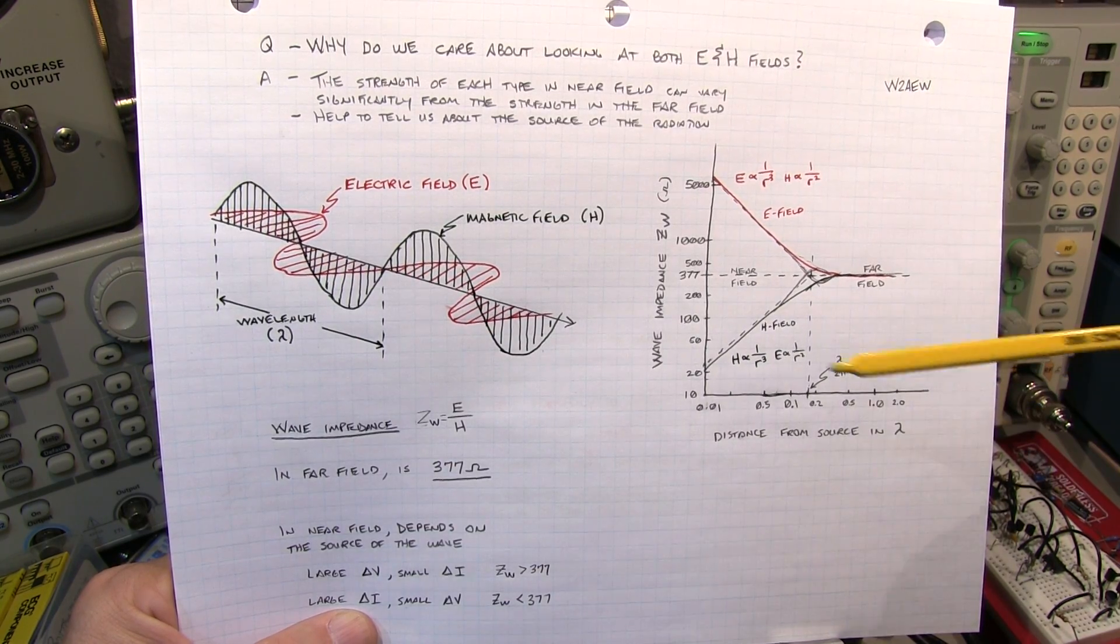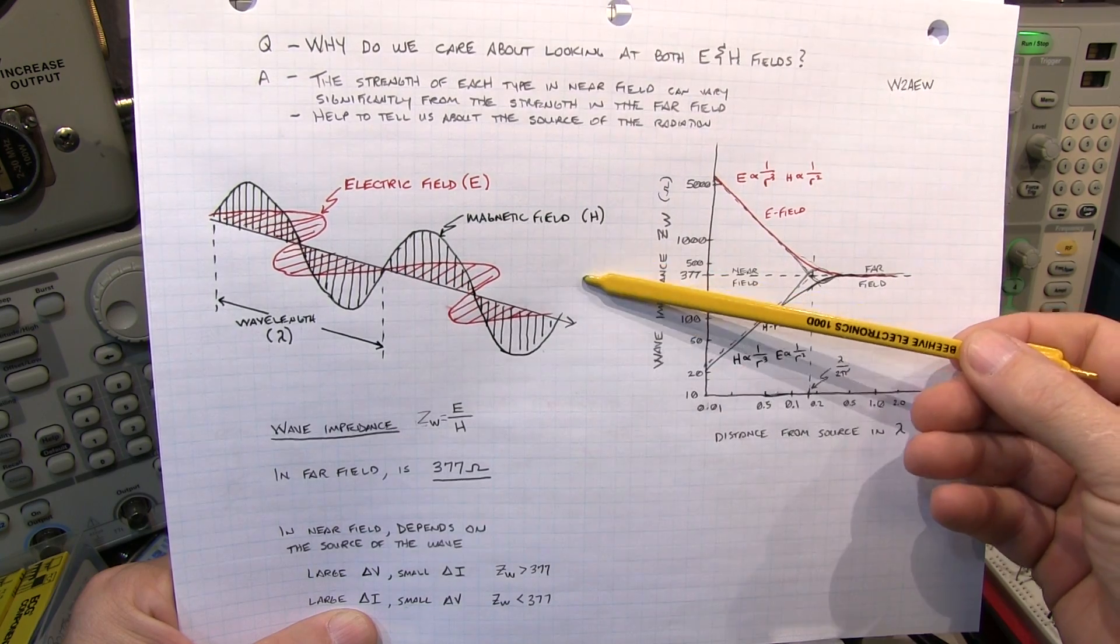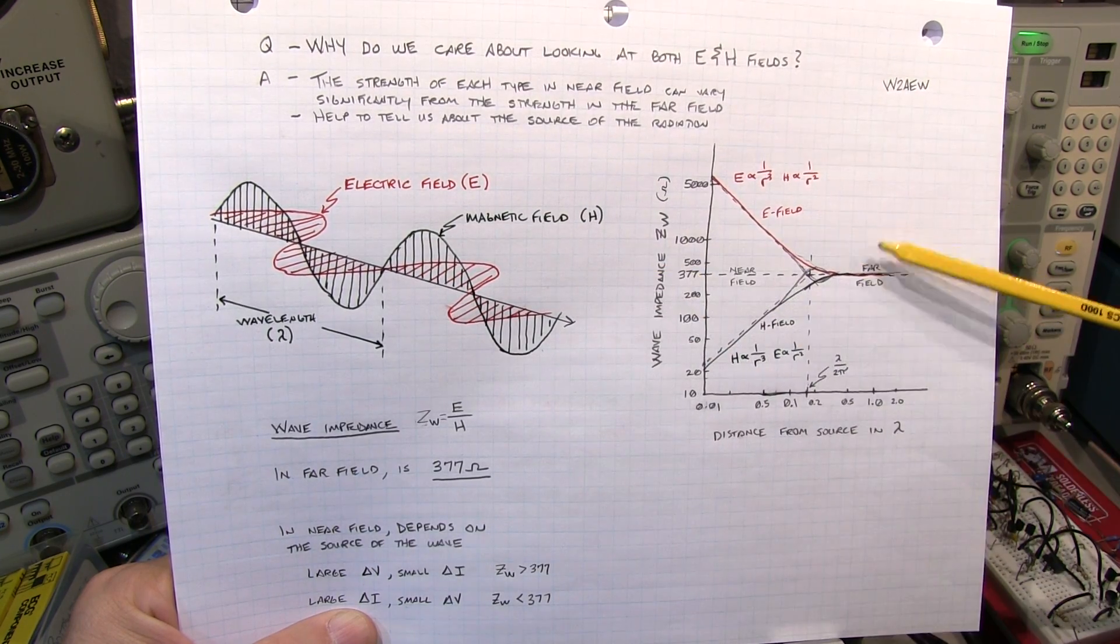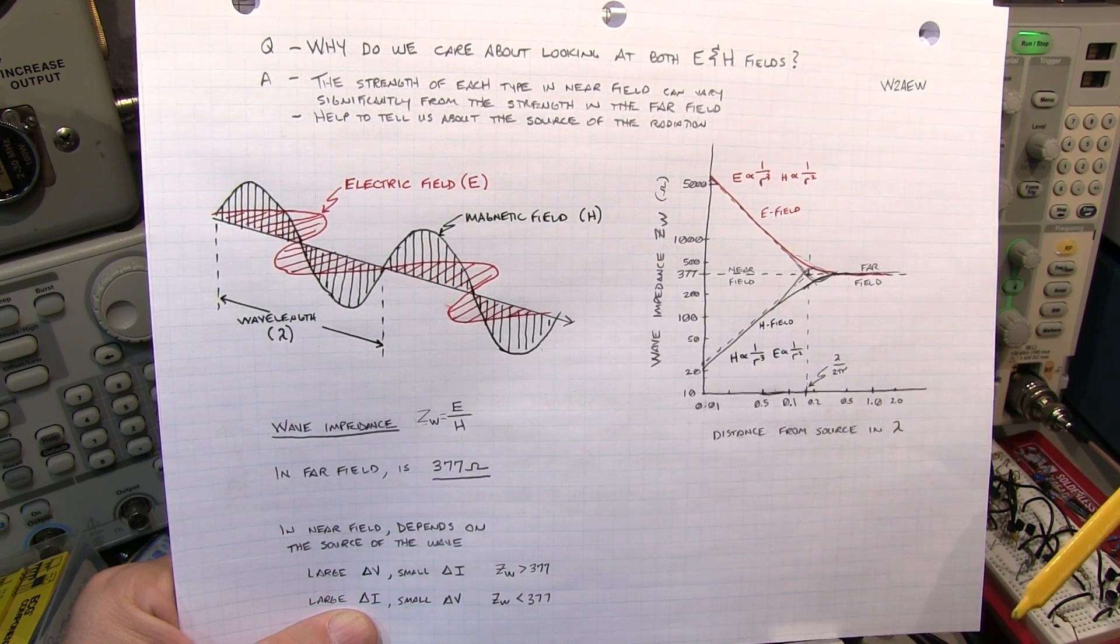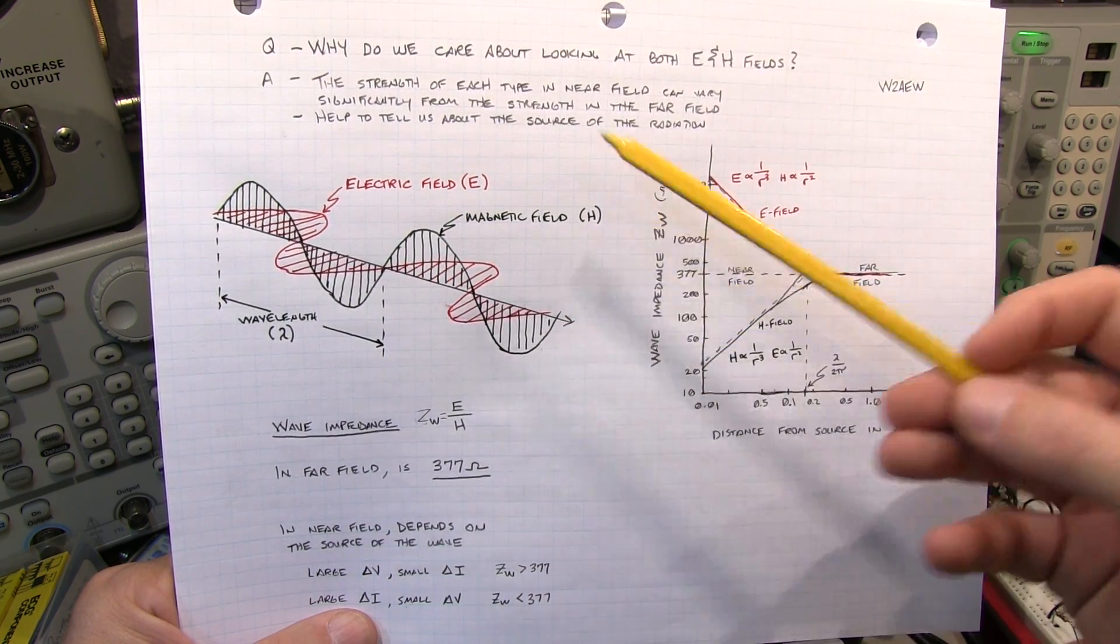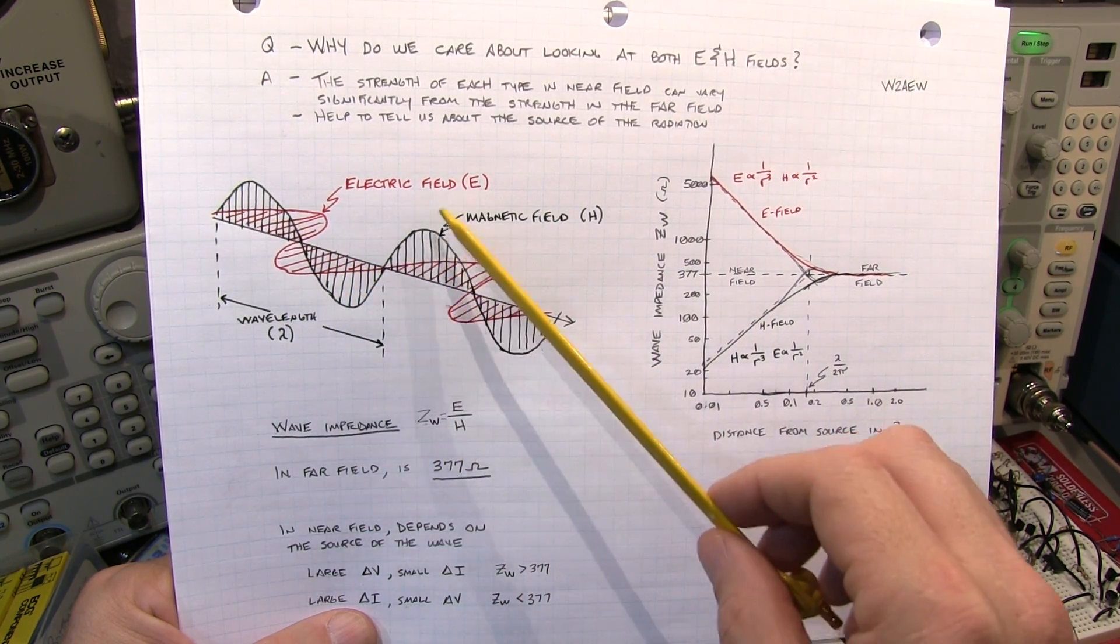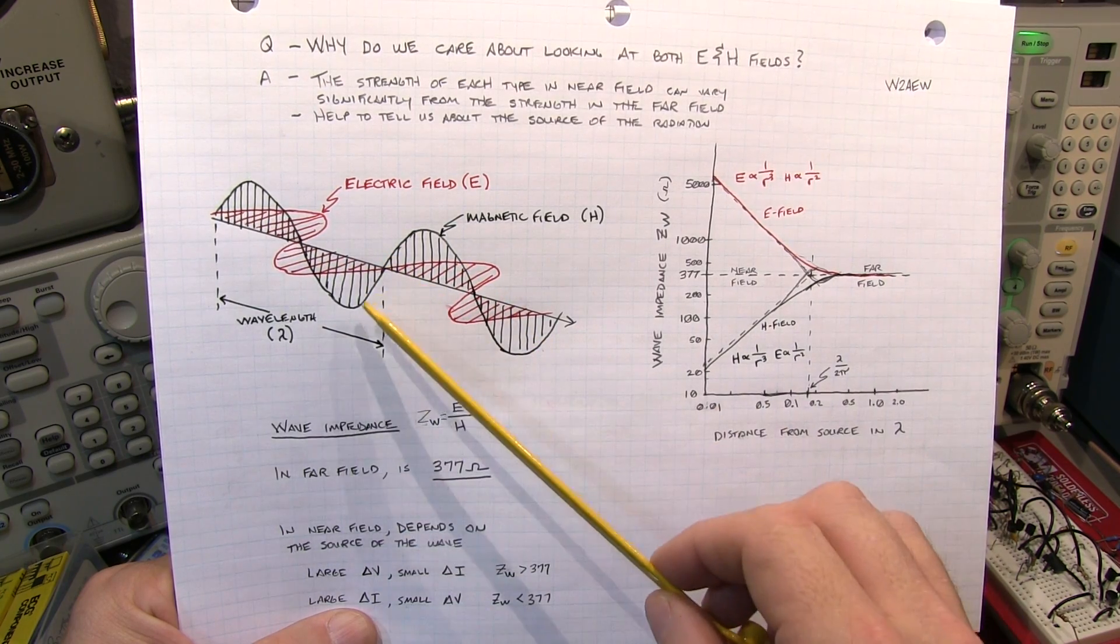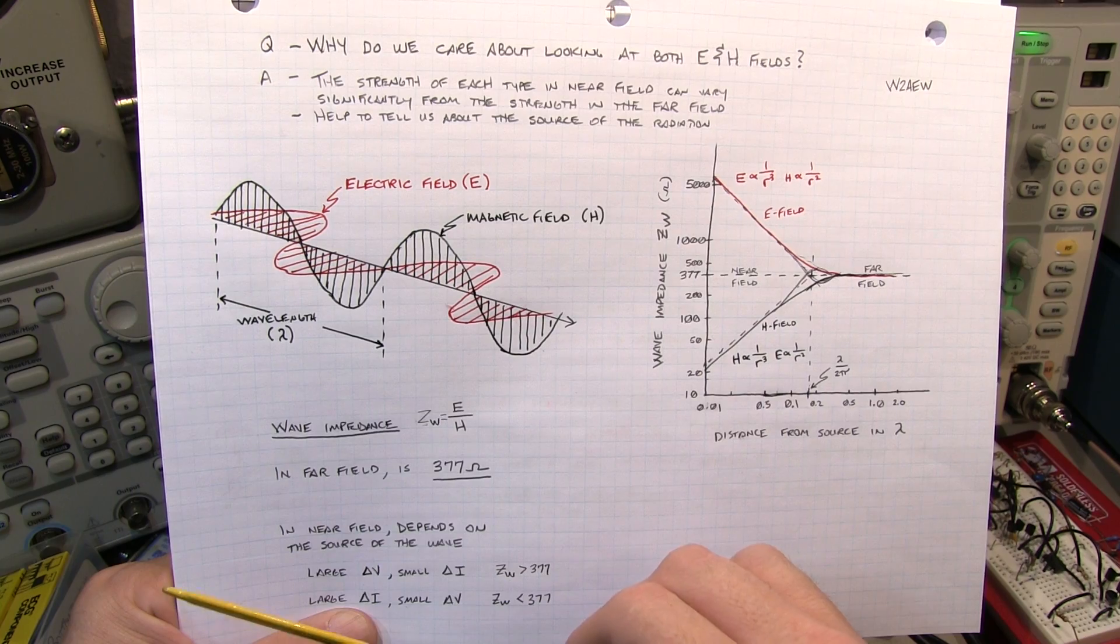An important thing to be aware of is that the measurements made with near-field probes may or may not match up with measurements made with an antenna in what's called the far field, typically done in EMI compliance measurements. And the reason has to do with the wave impedance. All electromagnetic waves consist of both a magnetic field and an electric field, and the ratio of the strength of those two fields is called the wave impedance.